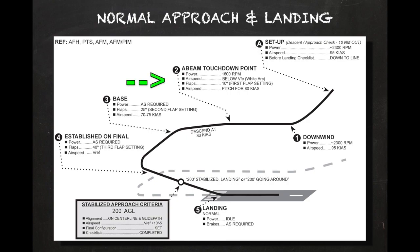The initial segment of the normal approach generally begins on the downwind leg when the aircraft is abeam the landing threshold. Abeam means the wingtip aligns with the start of the landing runway. However, if the downwind needs to be extended for any reason such as traffic, the start of the approach must be delayed until the appropriate time.